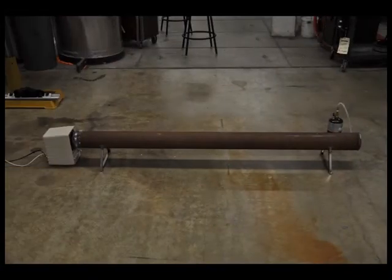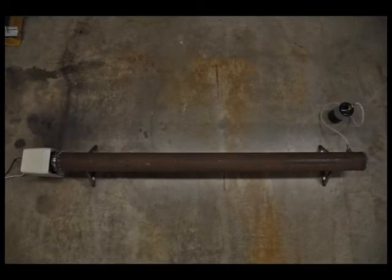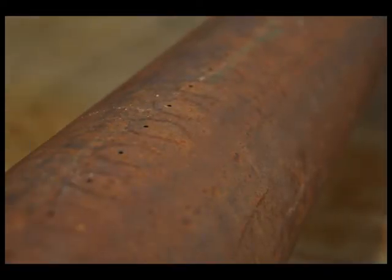Our Rubens Tube consists of a 6-foot, 5-inch diameter iron pipe. Down its length, we've drilled 61 1/16th inch diameter holes, spaced one inch apart.